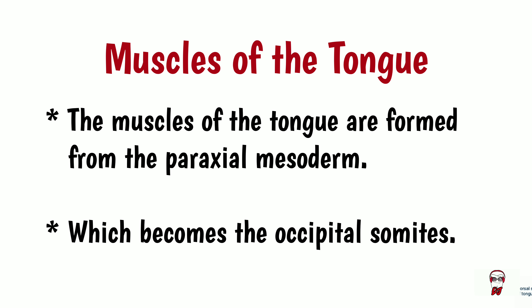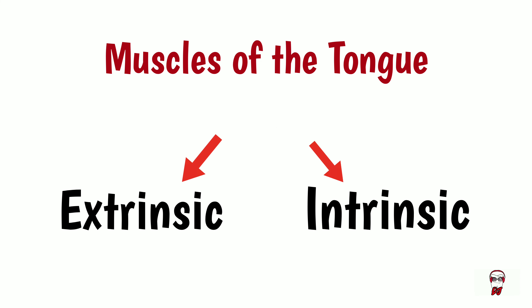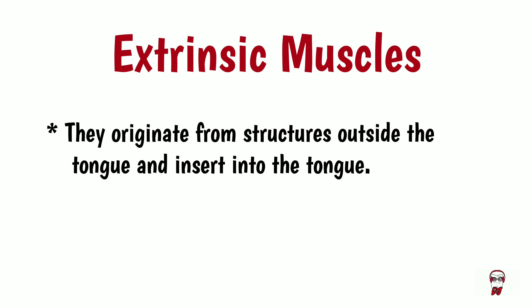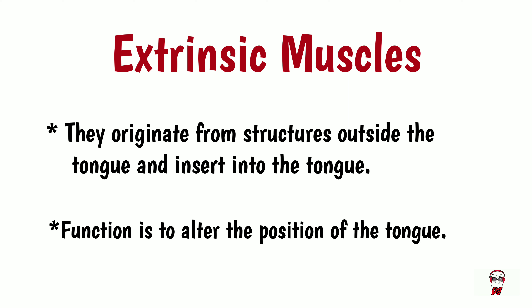The muscles of the tongue can be divided into extrinsic and intrinsic muscles. Extrinsic muscles, as the name suggests, originate from structures outside of the tongue and they insert into the tongue. Their function is to alter the position of the tongue, such as protrusion, depression, and side-to-side movements.